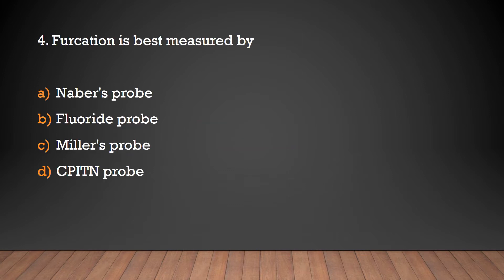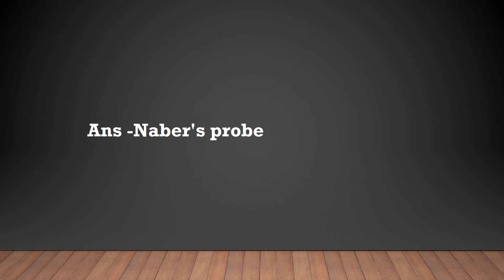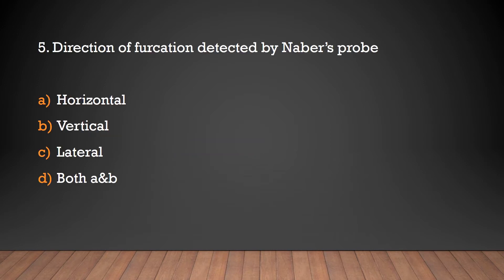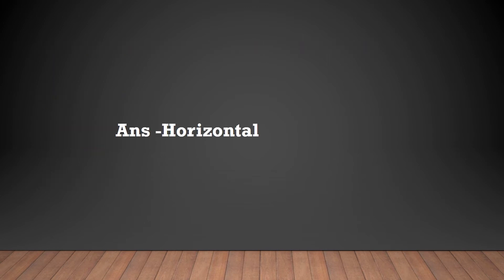Question 4: Furcation is best measured by Nabers Probe, Florida Probe, Miller's Probe, or CPITN Probe? Answer: Nabers Probe. Furcation is detected by Nabers Probe. Question: Direction of furcation detected by Nabers Probe - horizontal, vertical, lateral, or both A and B? Answer: Horizontal.